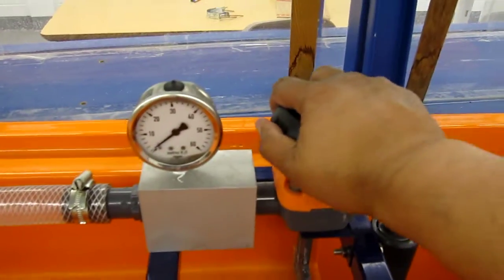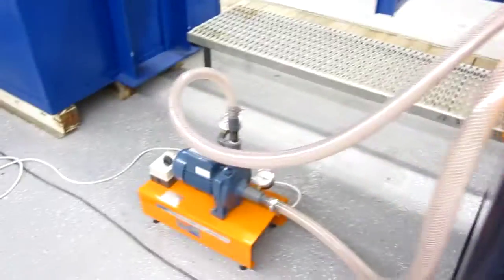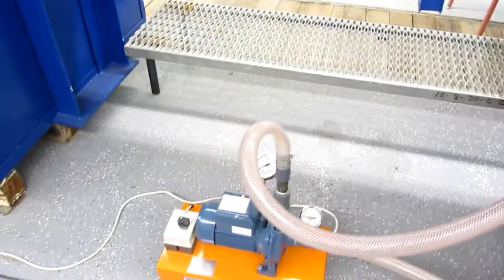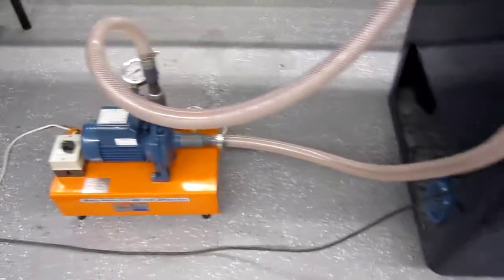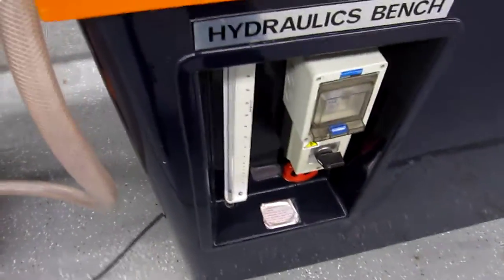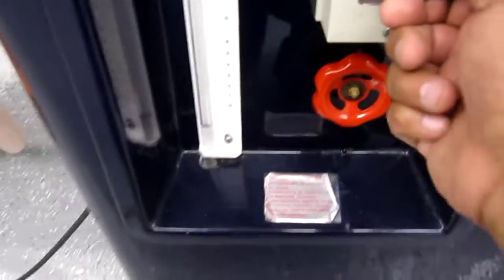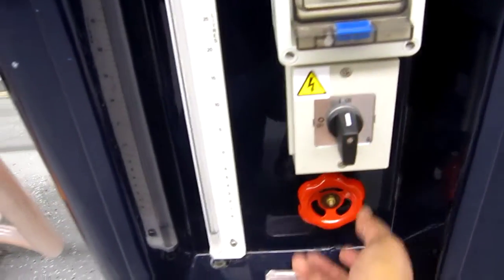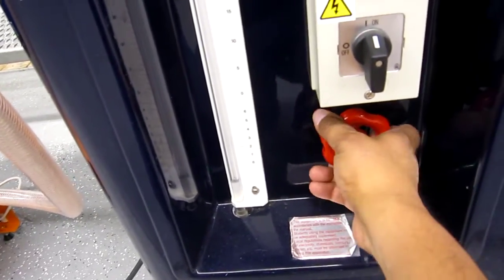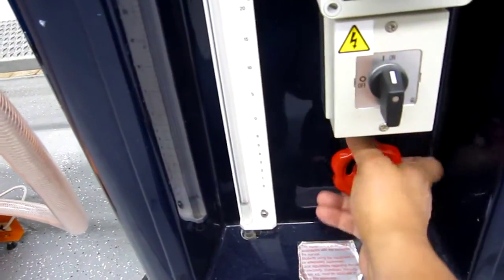To do the experiment, make sure that this valve is closed and this valve is closed. Now the pump doesn't have a valve. The external pump. So what we do first is start the hydraulic bench pump and open it up fully.